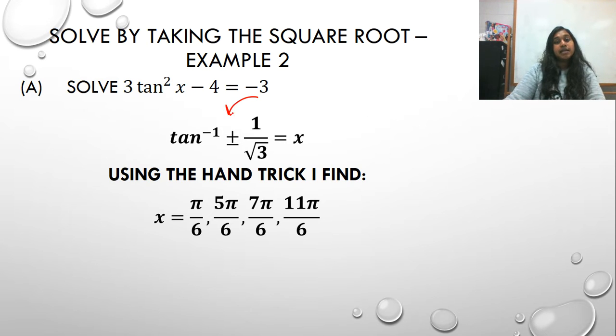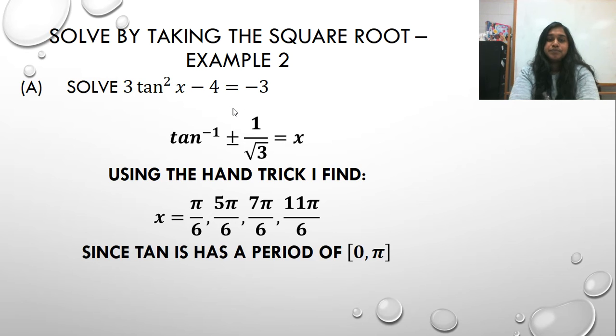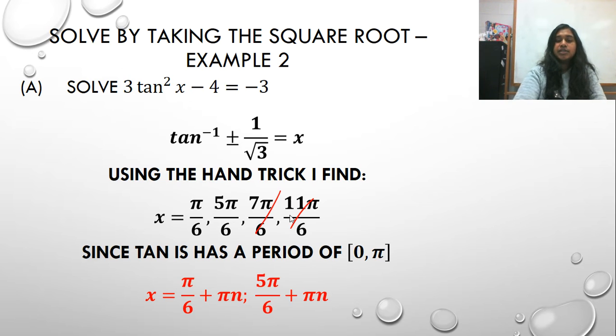Okay, because it's plus or minus, technically, those are my four answers, and I'm done. However, because tan has a restricted period already of zero to pi, I'm allowed to cancel out two of my answers, and I'm only left with these two answers.